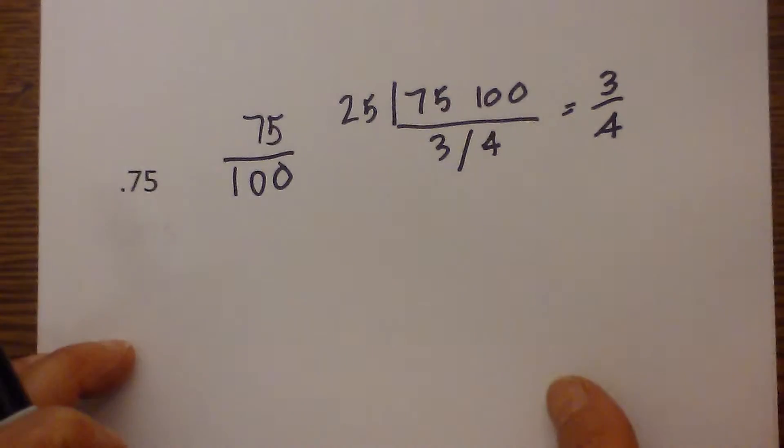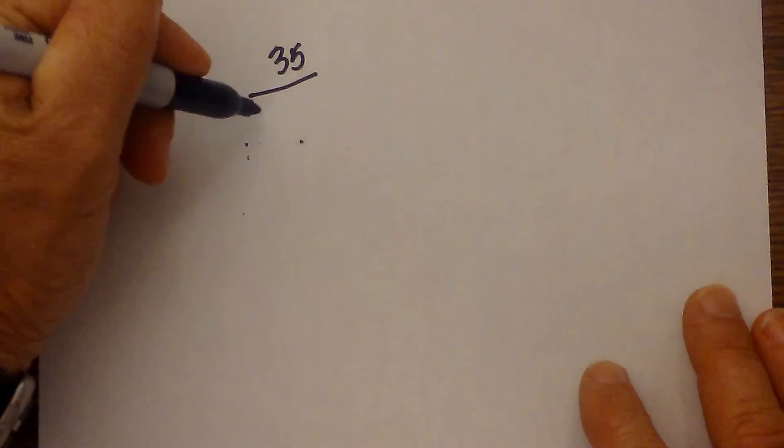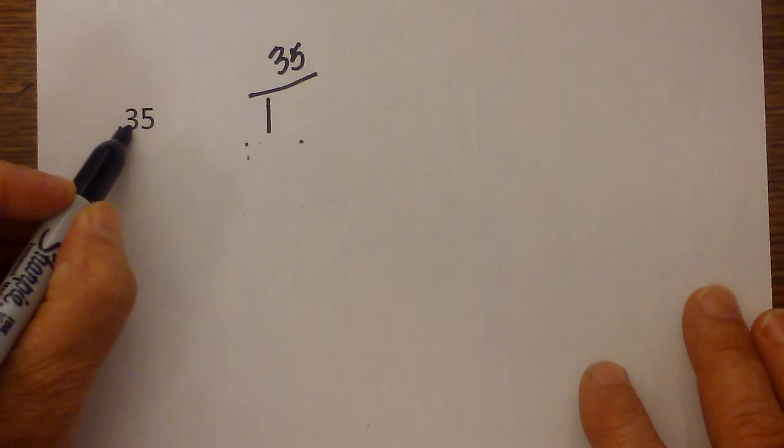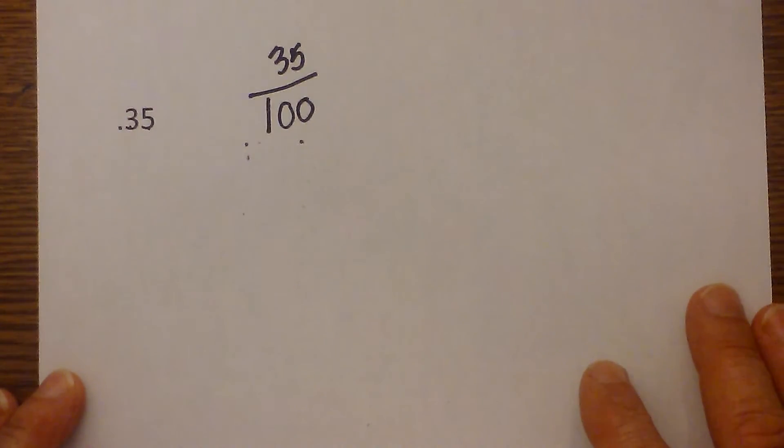Let's work another example of this shortcut method. We have the fraction 0.35. I write a 35, place it to create a fraction, write down a one. I have one, two numbers to the right.